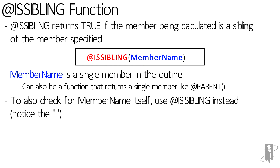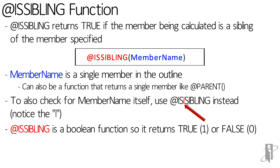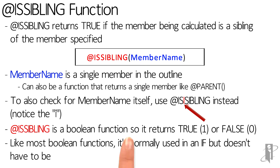If you want to check for the member itself as well, you put an 'i' after the 'is' to get isIsSibling. Otherwise, it will return true for any member that has the same parent as the one you're on, except for the member itself. Like all boolean functions, it returns a true — otherwise known as a one — or a false — otherwise known as a zero — and it's normally used inside of an if function.